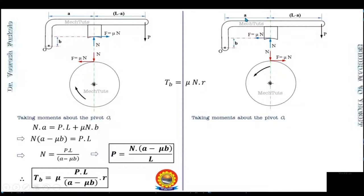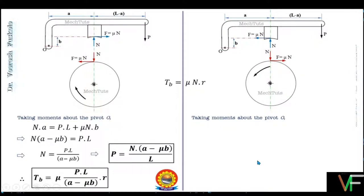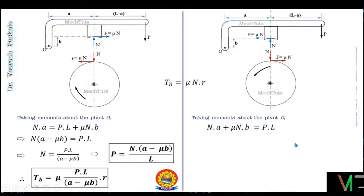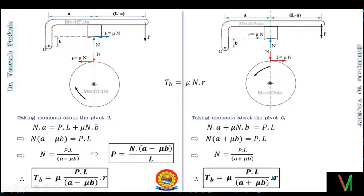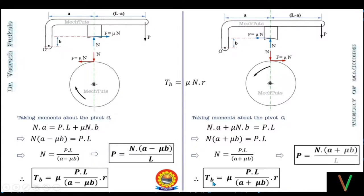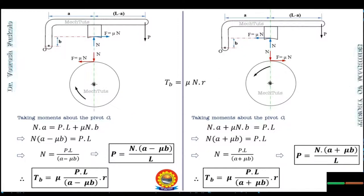Taking moments about O: N × A is anticlockwise, F × B (i.e., μN × B) is also anticlockwise, and P × L is clockwise. The moment equation is N·A + μN·B = P·L, giving N(A + μB) = PL, so N = PL / (A + μB). Substituting into the torque equation: Tb = μPLR / (A + μB). The applied force is P = N(A + μB) / L. These are the equations for fulcrum below the friction force line, for both clockwise and anticlockwise rotation.